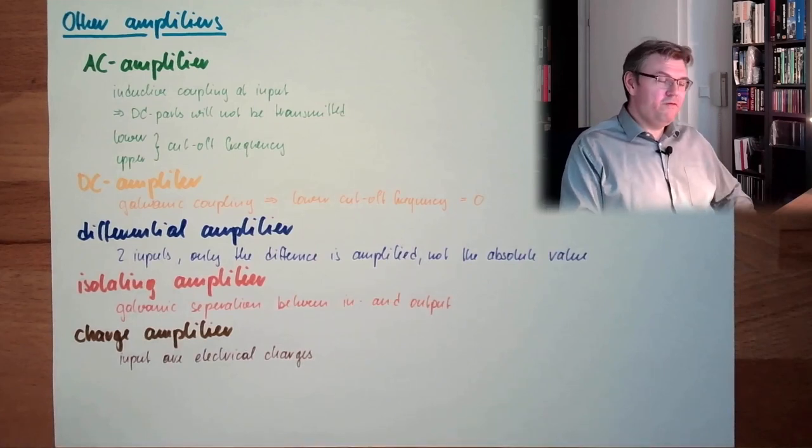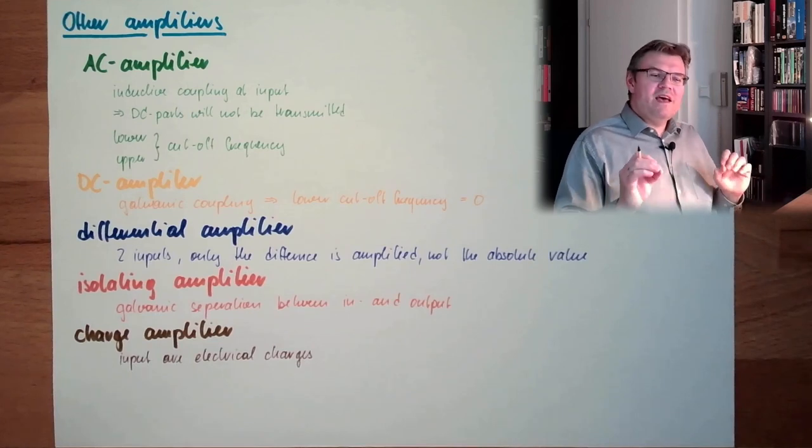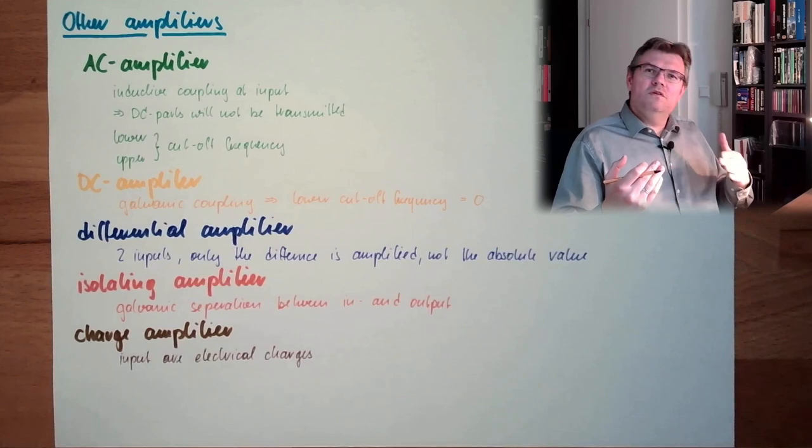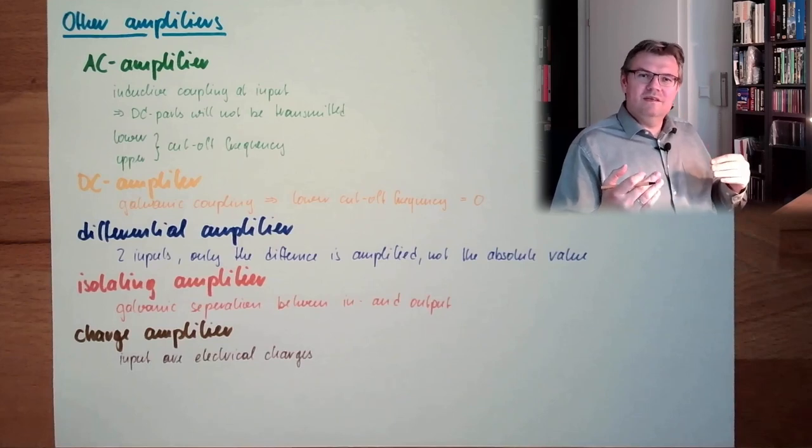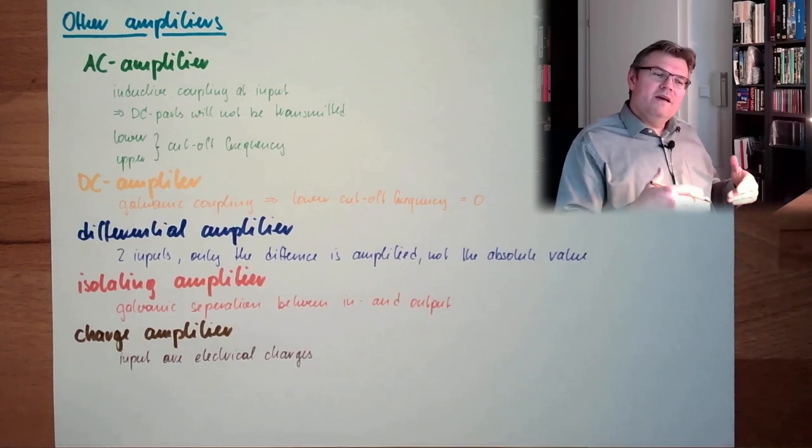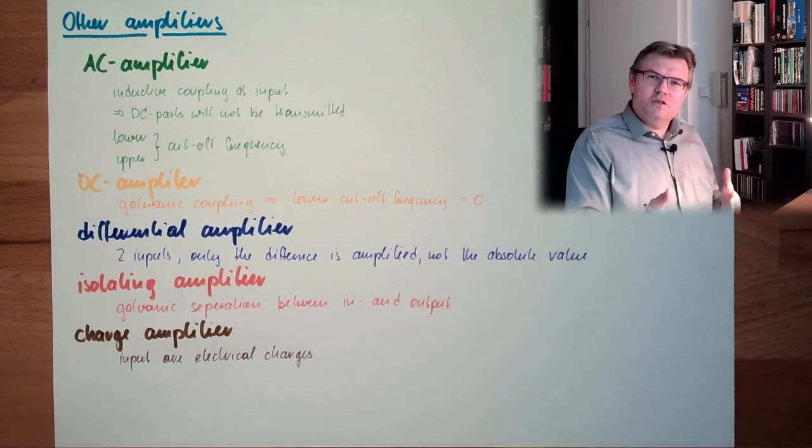There are only a few charges. And so those charge amplifiers, they have a huge input resistance. So there are no charges passing through the amplifier. It's really like counting the charges. So this is called a charge amplifier.